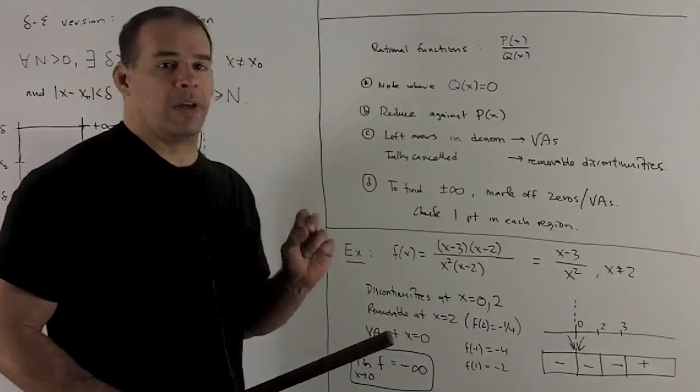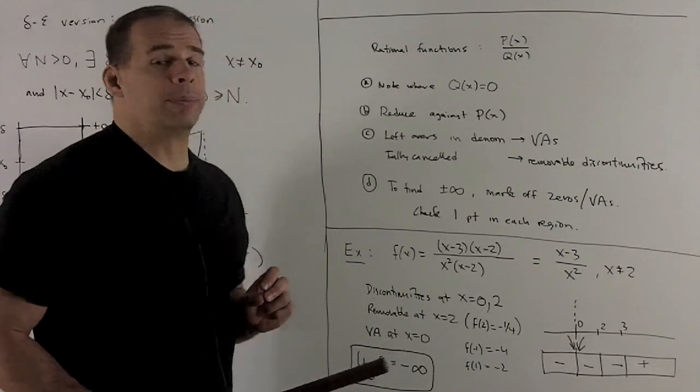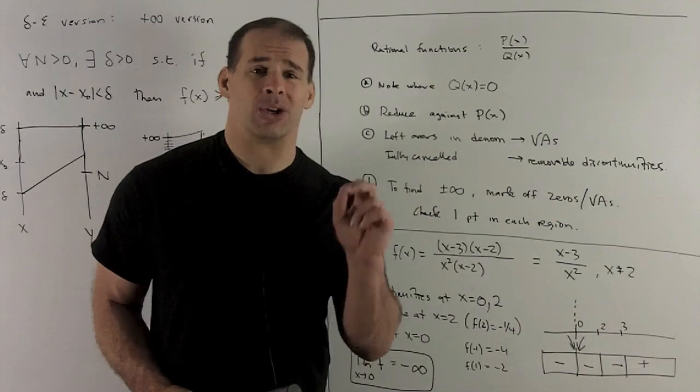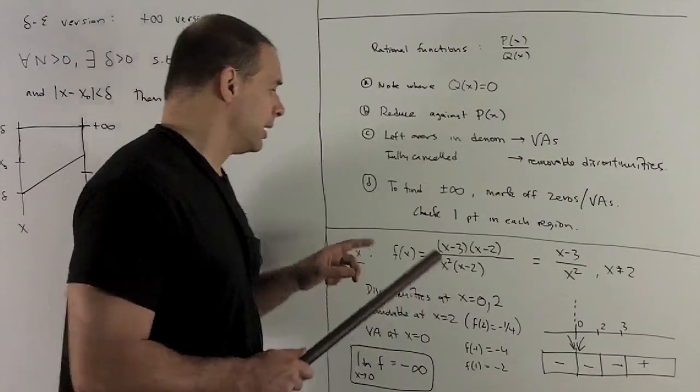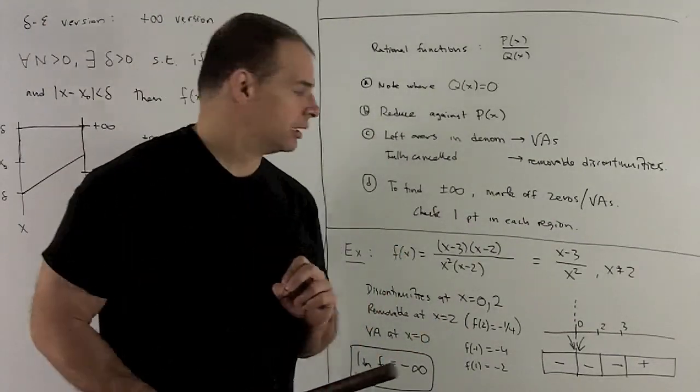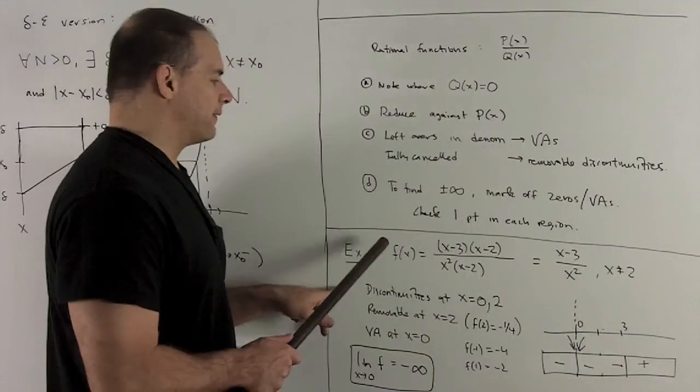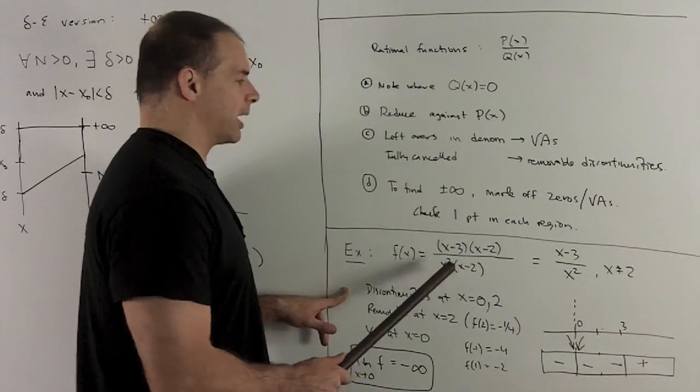To decide what to do with plus or minus infinity for the one-sided limits, what do you have to do? You mark off where all your vertical asymptotes and all your zeros are, so the zeros are going to be what's left over in the top. And then what you do is you check one point in each region to get the sign. So let's look at the example f of x equal to x minus 3 x minus 2 over x squared x minus 2.